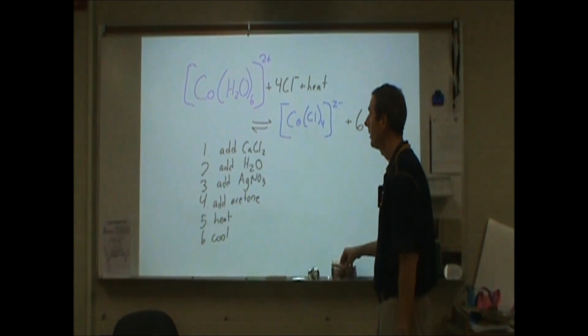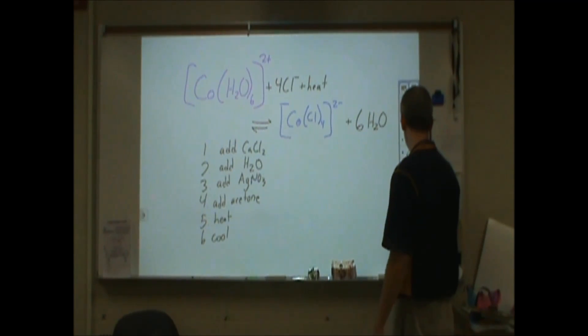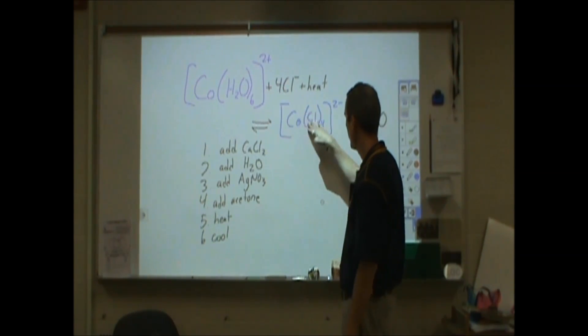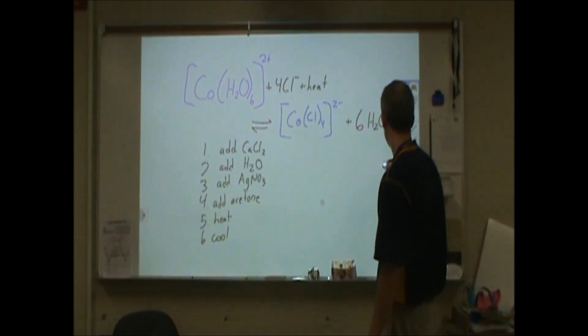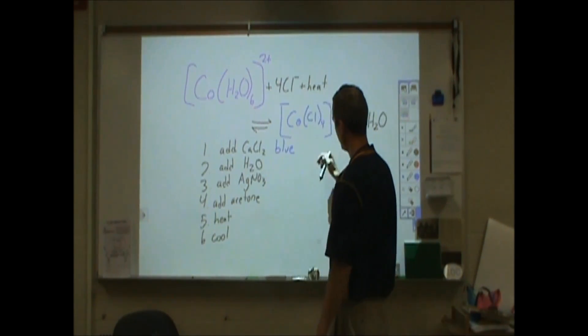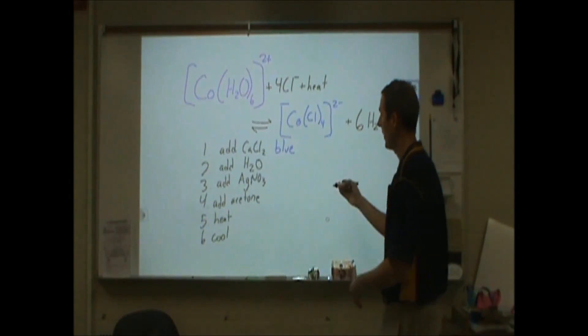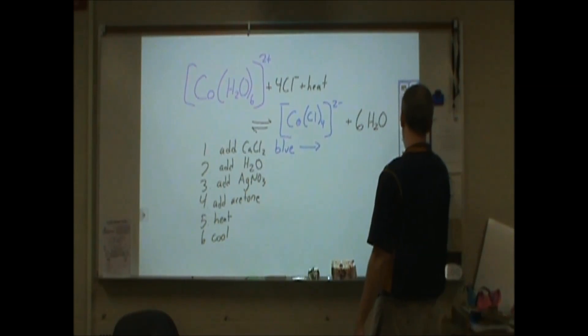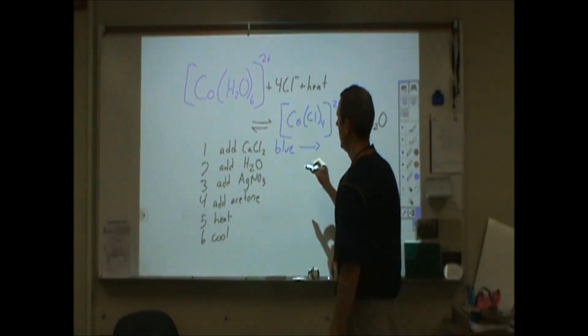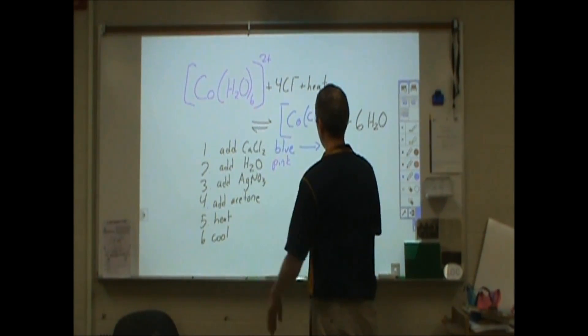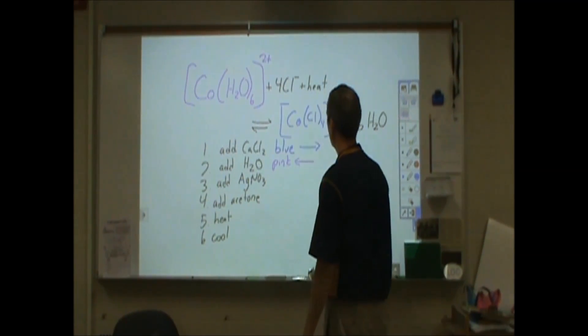So finally we can come back here. When we added calcium chloride, our first test tube, we had an increase in concentration of this. Our Q went down. Q had to increase to get back to K, and so our mixture turned blue, indicating we're forming more product or a shift to the right. And when we added water, we saw the opposite occur. We saw this turn pink. We formed more of the water complex, which we saw it shift to the left.